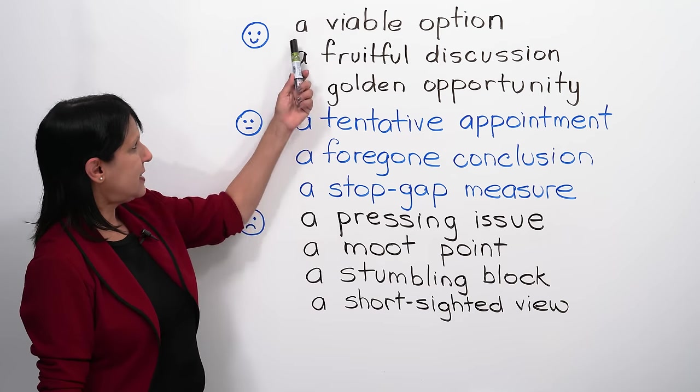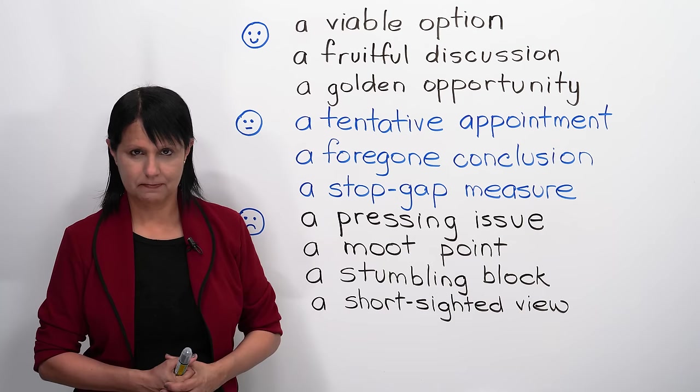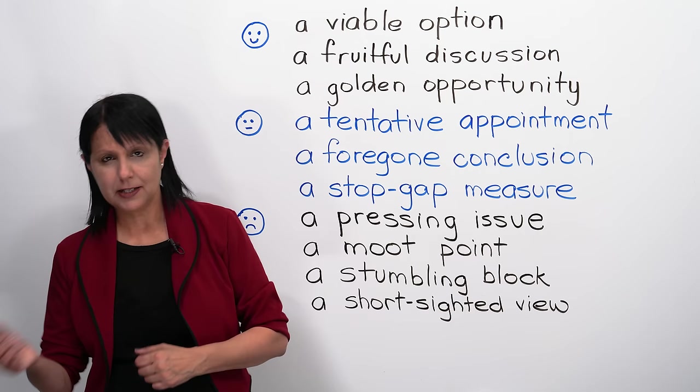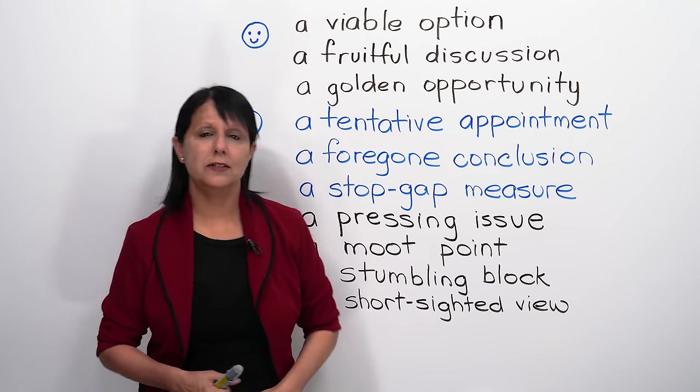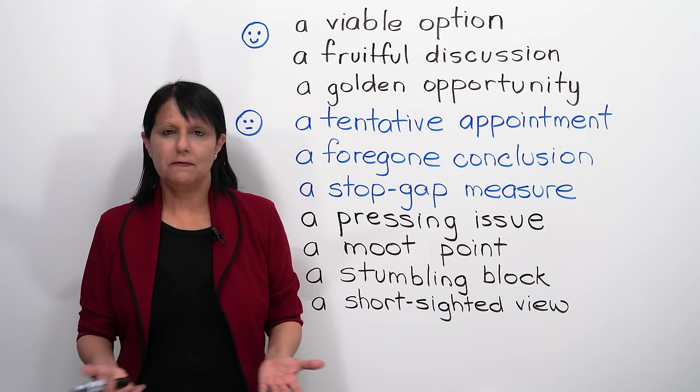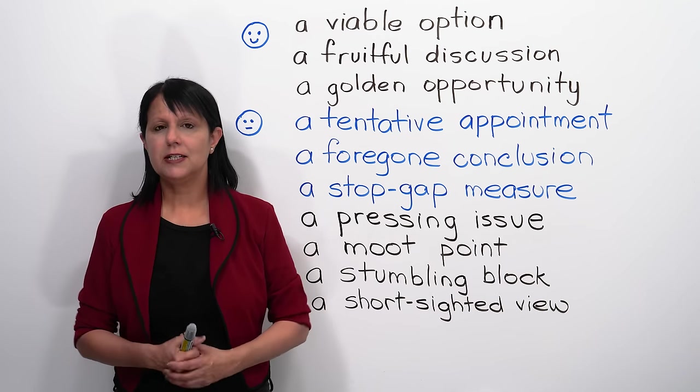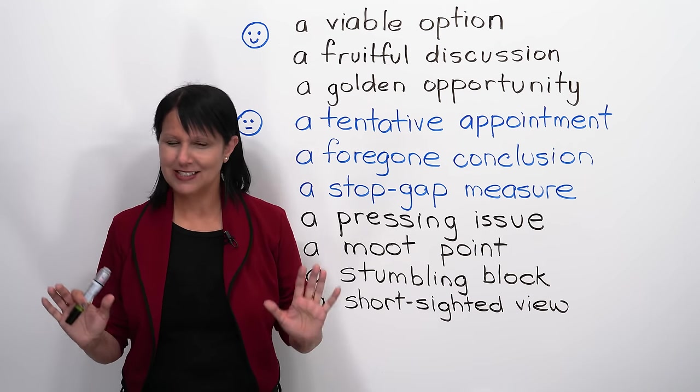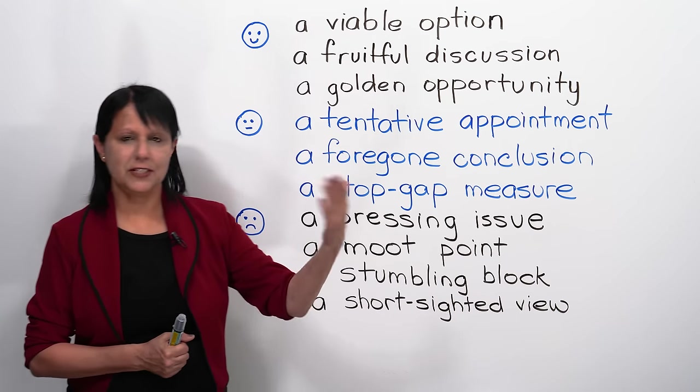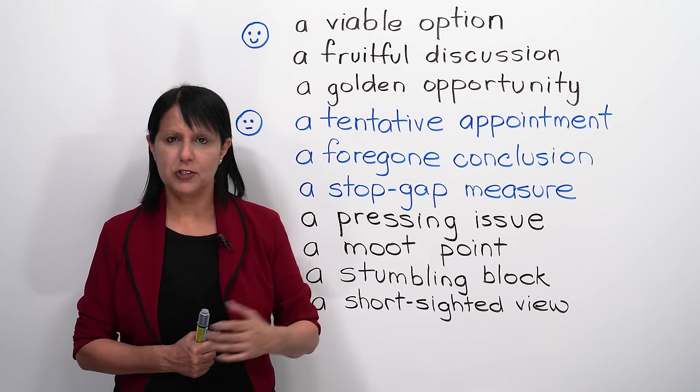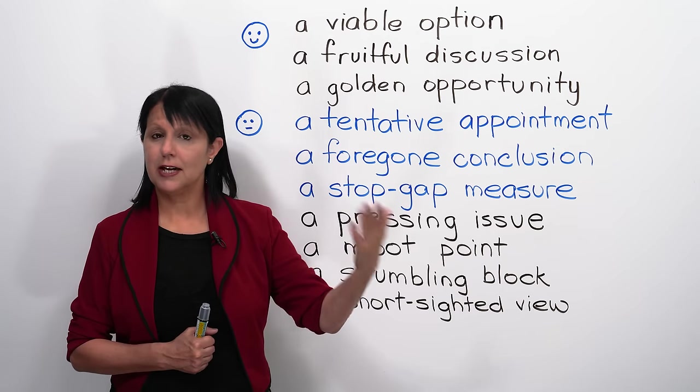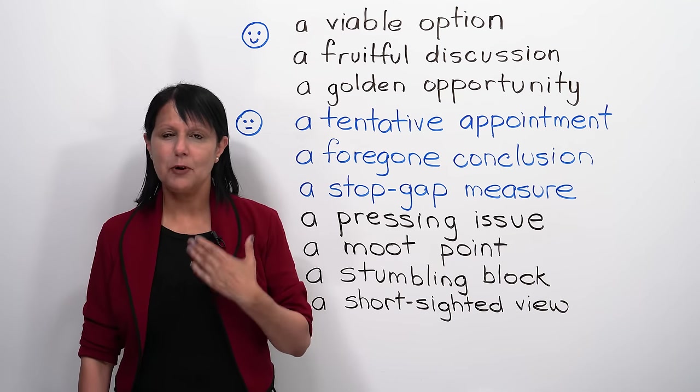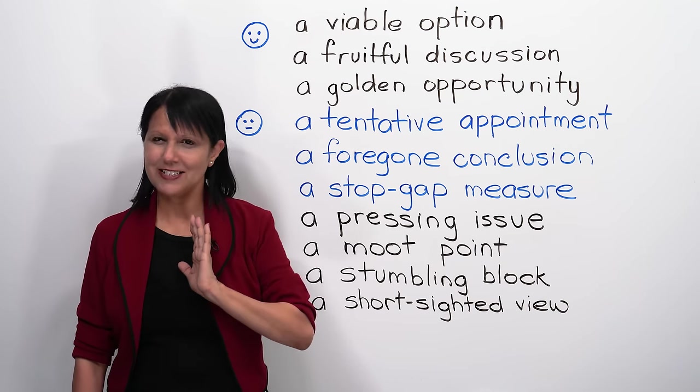But if somebody uses the expression, then you really need to know that because that adjective is critical to understanding it. So, let's go through them one by one, and then you will know them. So, here we go. The first one is a viable option. So, option is what? Like something you could do this, or you could do that. But viable, what does viable mean? Viable just means possible. It's a viable option means it's a possibility. That's what it means, that's all. For example, let's say you have to get downtown, so you could take public transportation, you could take a taxi, you could drive. These are all viable options. Possible options. That's it.